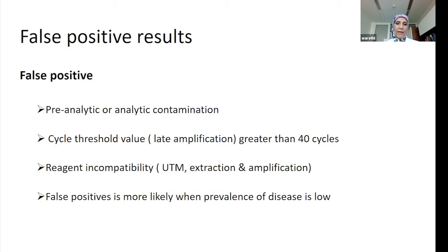Something amplifying at cycle 42, on an analyzer that stops at cycle 38, would be called negative. But an analyzer running all the way to cycle 45 might call something amplifying at cycle 42 as positive, enhancing confusion about whether that is a false positive. We see this phenomenon in people who are clearing the virus — they still have virus, but it lingers a little.